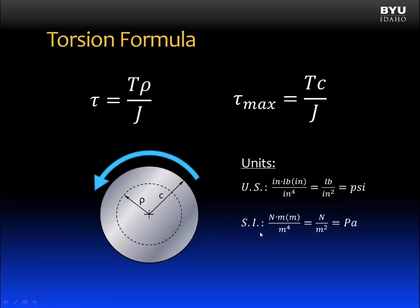In SI units, torque is typically given in newton meters. C in meters. And J in meters to the fourth power. This reduces to newtons per meter squared or pascals.